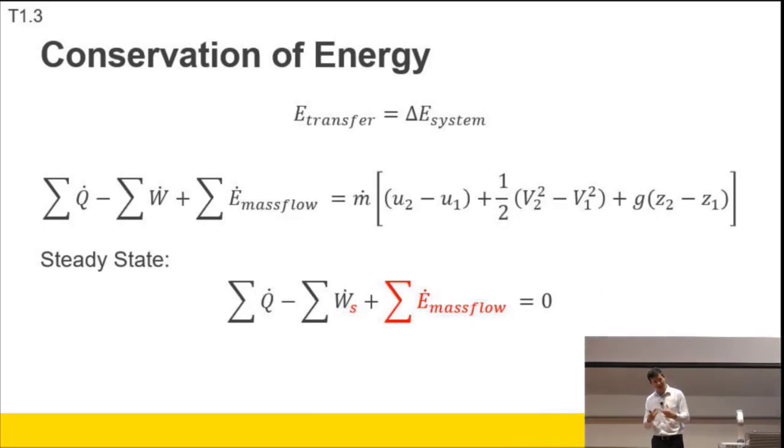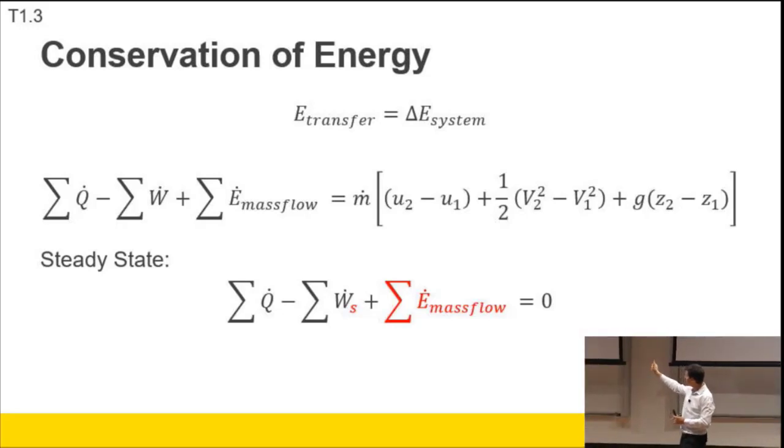So what about conservation of energy? That's conservation of mass. Conservation of energy. For our closed system we kept the terms on the right of this equal sign and we got rid of the mass flow rate term on the left hand side because there's no mass flow but the energy in the system can change. Now we're saying there is mass flow in and out of the system but the internal energy, the velocity and the potential energy, the kinetic energy and the potential energy aren't changing with respect to time. Whatever they are they're staying where they are.